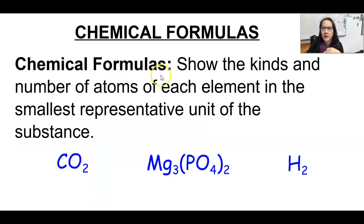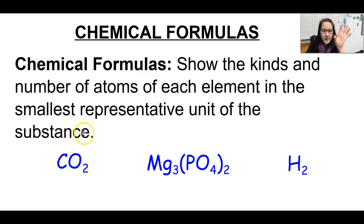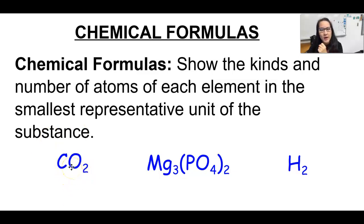Chemical formulas are used to show the kinds and numbers of atoms of each element in the smallest representative unit of a substance. For example, the carbon dioxide that we breathe out and that trees absorb — all the way down to just one unit of that compound — would be CO2: one carbon bonded with two oxygens.